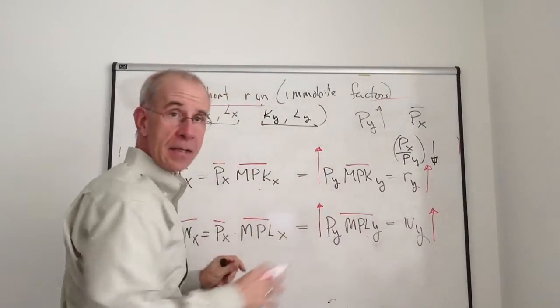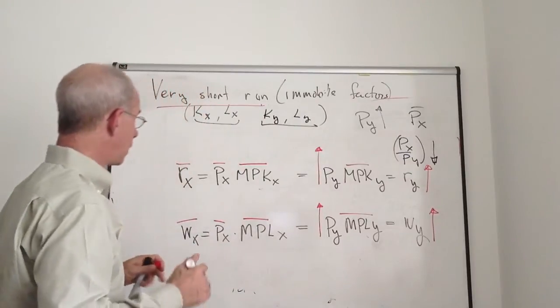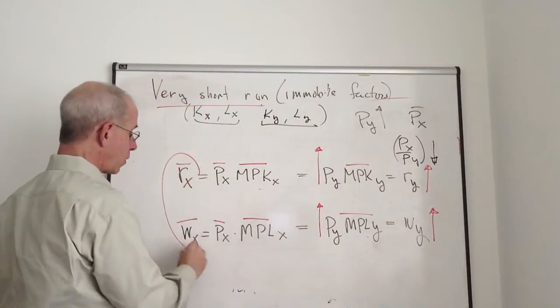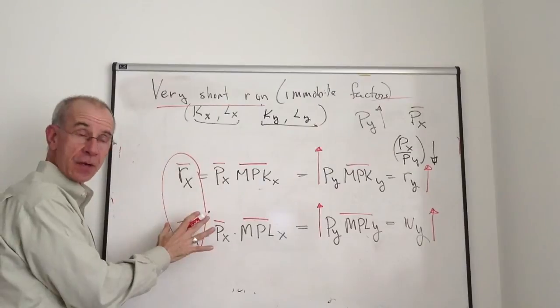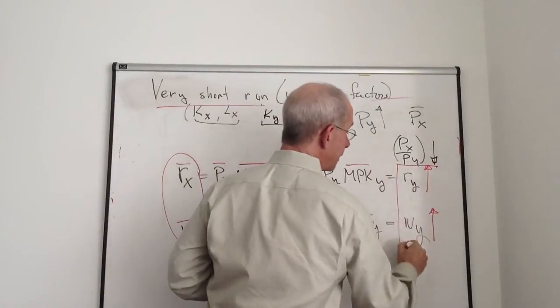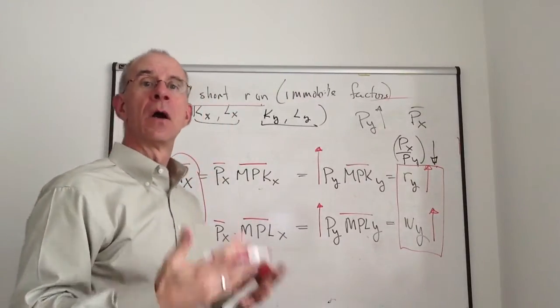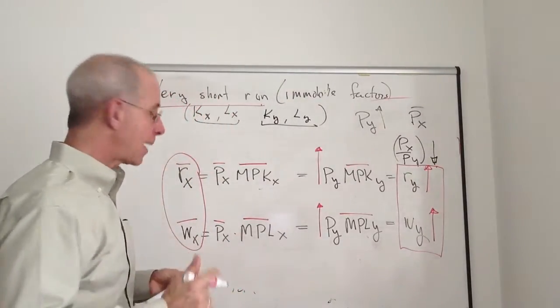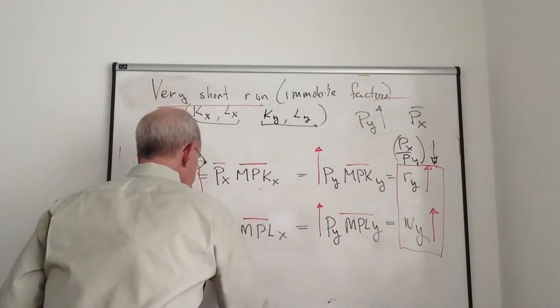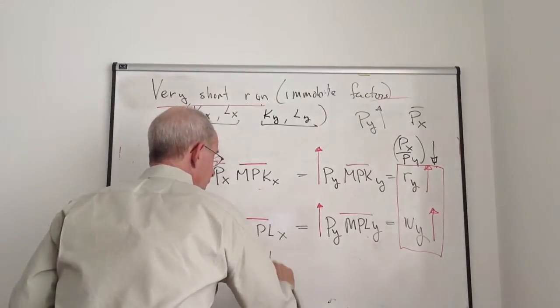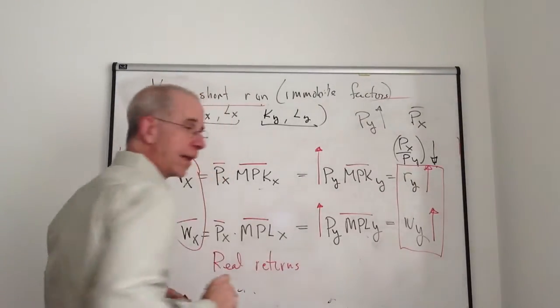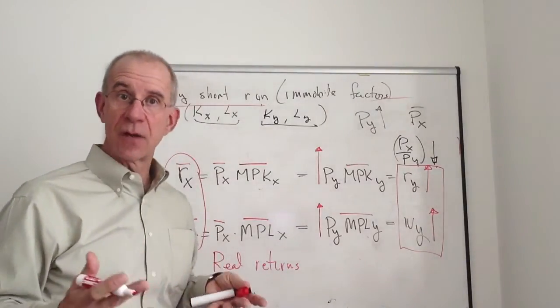Now let's combine these two results where nothing is changing over here in nominal terms, and the payments to labor and capital on this side are going up. What's happening to the real returns? That is to say, the ability of labor and capital in the two sectors to buy stuff.